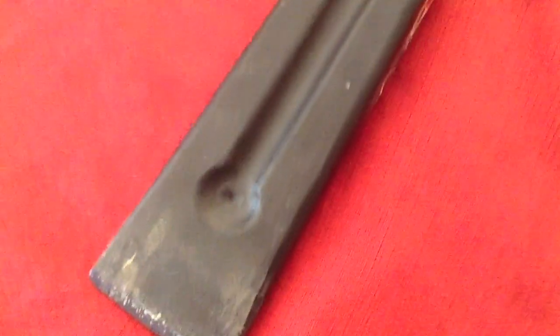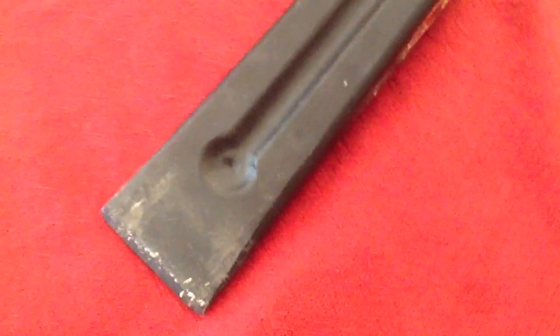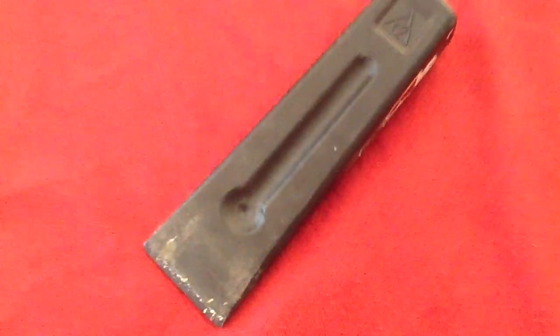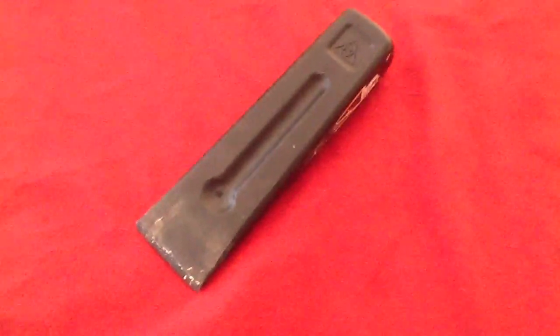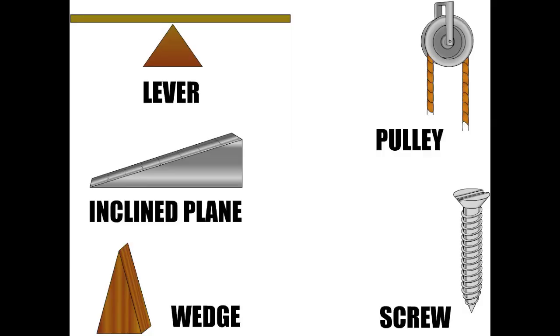A wedge is a triangular tool with a flat top on an inclined plane. It can be used to separate two objects or portions of an object, lift the object, or hold it in place. It is one of the five Greek classic simple machines and has its purpose in architecture, lifting and separating, and for blades.